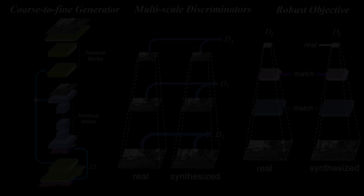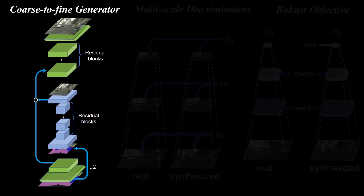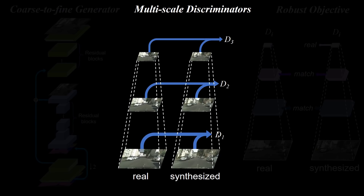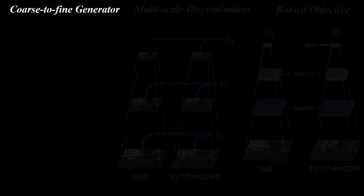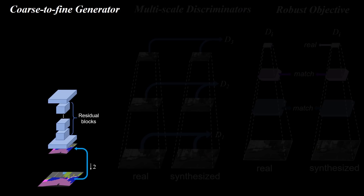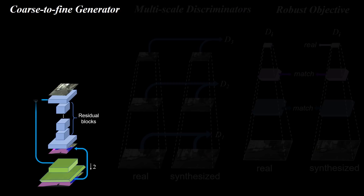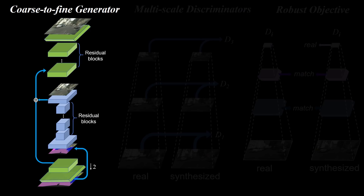We achieve these results by using a coarse-to-fine generator, multi-scale discriminators, and a robust adversarial objective. Our generator consists of a global generator and a local enhancer. The global generator takes a down-sampled label map as input and generates low-resolution results. Then the local enhancer aggregates feature maps from both the global generator and the original label map to produce the final output.